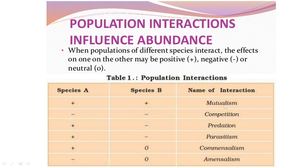If both populations are being benefited due to that interaction, such an interaction is referred to as mutualism. If the interaction is proving detrimental to both populations, that is termed competition. There can also be a type of interaction where one population is benefited whereas the other species is always harmed — that is predation.